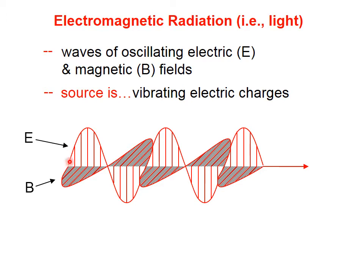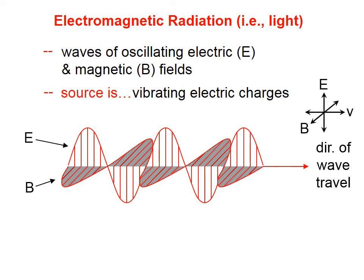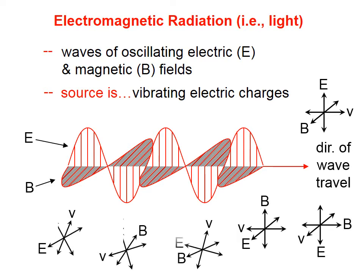Here's a model of light as a transverse wave, where you can see the electric field is oscillating in one direction, and the magnetic field is oscillating at 90 degrees to it. And the direction of wave travel is at right angles to both of these. Just because I've drawn the electric field vibrating up and down and the magnetic field vibrating sideways doesn't mean that that's always how light travels. As long as the electric field, the magnetic field, and the direction of wave propagation are at right angles, that's all that's required.